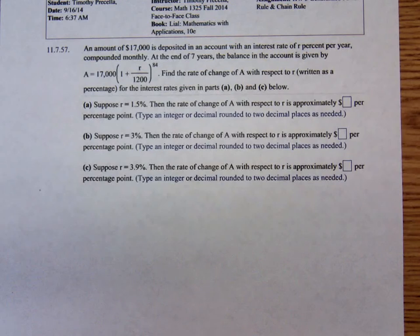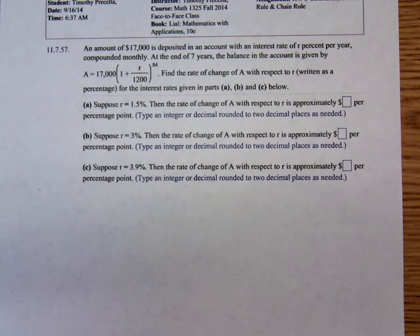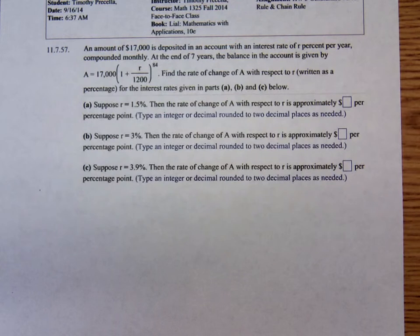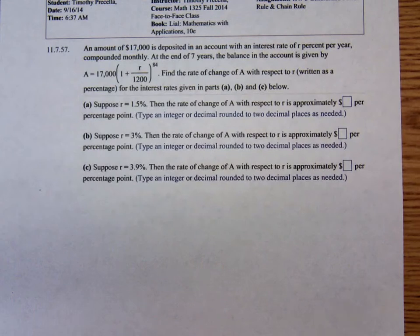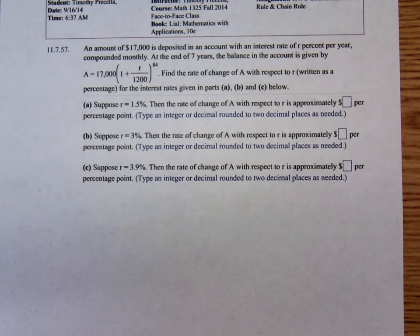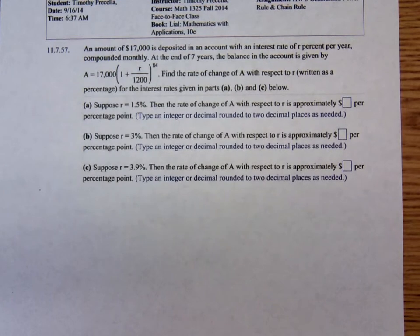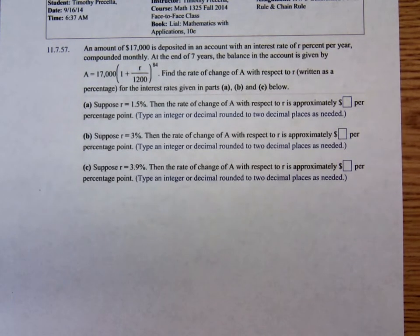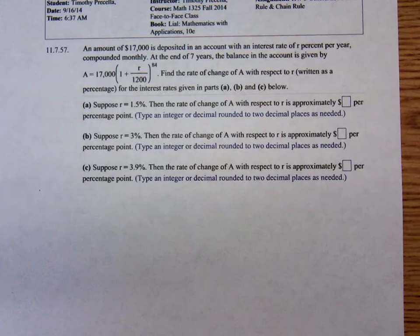However, they modified the formula slightly. Here's the problem: an amount of seventeen thousand dollars is deposited in an account with an interest rate of r percent per year compounded monthly. At the end of seven years, the balance in the account is given by A equals seventeen thousand times one plus r over twelve hundred to the eighty-four power. Find the rate of change of A with respect to r written as a percentage.